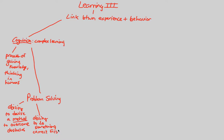Why is doing something correct the first time different from what we've studied so far? In associative learning, we needed some sort of cue — a physiological response, like meat powder, or a positive reinforcement like food — to cause learning. But problem-solving and cognition are all about solving the problem correctly the first time. This does not involve trial and error, at least not nearly as much as associative learning.